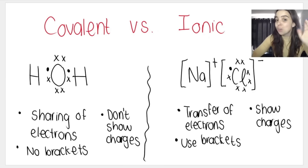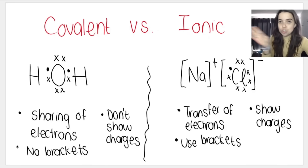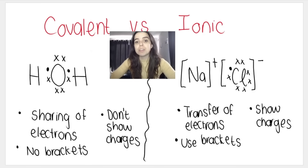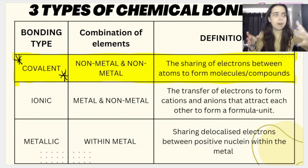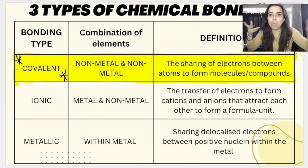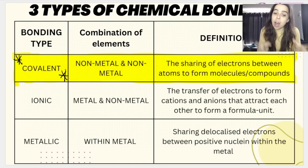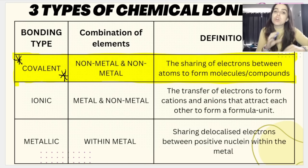That's just a quick visual way to tell the difference between a Lewis dot diagram representing covalent bonding versus one representing ionic bonding. So what are Lewis dot diagrams? Basically, Lewis dot diagrams are a visual representation of how atoms bond with one another. They show how atoms share electrons in a covalent bond, or how electrons are transferred in an ionic bond.